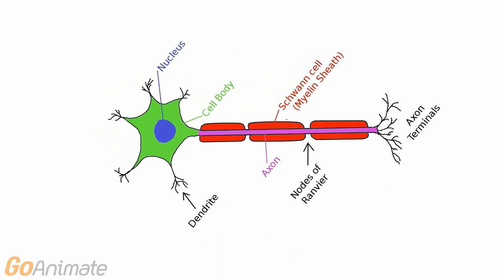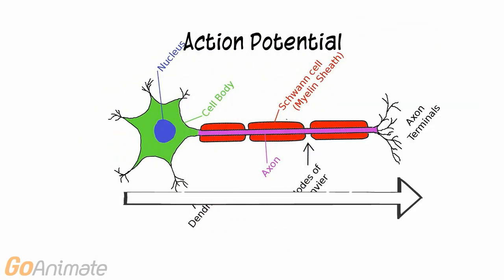In order for this communication to occur, neurons must generate an electrical impulse called an action potential.